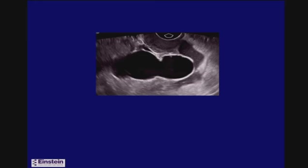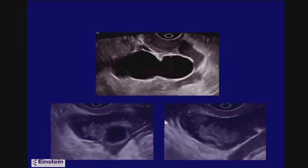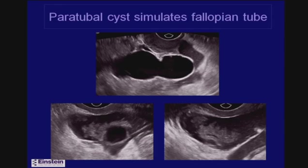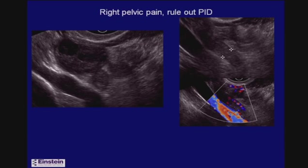Here's a patient with a somewhat tubular structure with what looks like an incomplete waist sign. However, we found the normal fallopian tube with a small paratubal cyst and the fimbriated end — so this other structure cannot be the fallopian tube. It actually represents a much larger paratubal cyst.